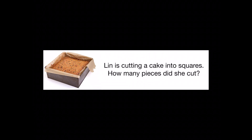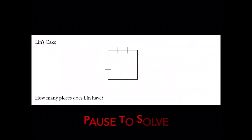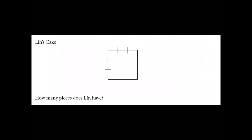Here's a different problem. Lynn is cutting a cake into squares — how many pieces did she cut? The tick marks on the outline show where she would be cutting the cake. You can pause the video to figure that out. How many pieces of cake are there after she cut the cake?